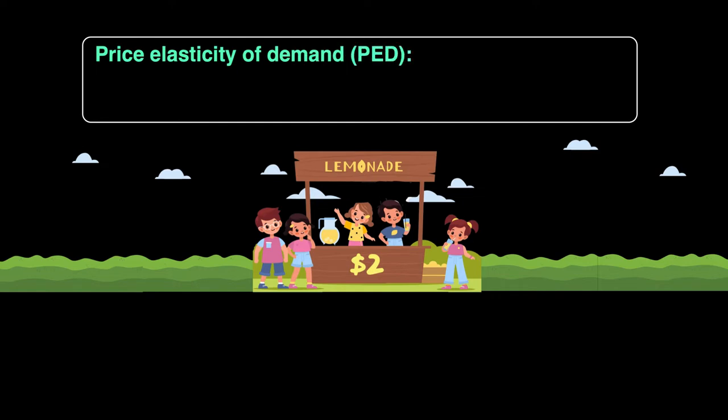Since the topic for today is price elasticity of demand, the factor we're using is price. We want to understand what happens to the quantity demanded of your product when you change the price of it. To illustrate this, I'll use a lemonade stand example.